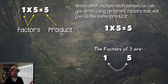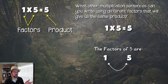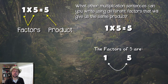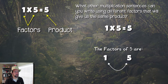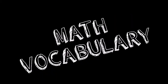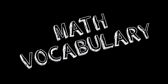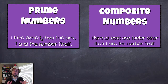Well, looking at 1 times 5 equals 5 — looking at that product of 5 — I'm not seeing any other factors. The only other factors I can find are 1 and 5. Interesting. Well, you know what this means, guys? I've got some exciting news, because it's time for some math vocabulary!